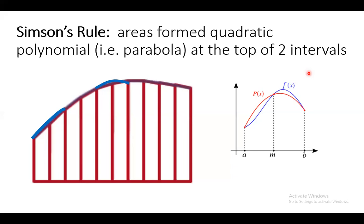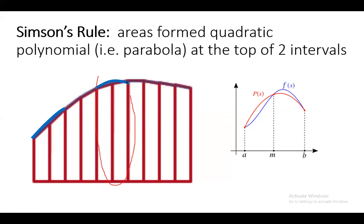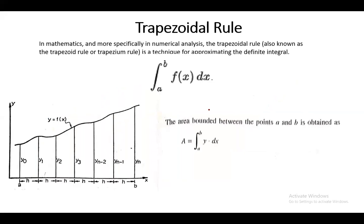For Simpson's rule, we consider the complex area divided not into trapezoids but into shapes where at the top there is a quadratic curve or parabola. We consider two intervals at a time - the end ordinate, mid ordinate, and another end ordinate: A, M, B. We calculate the area for each pair and add them all up - that is Simpson's rule.